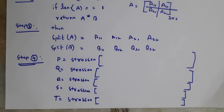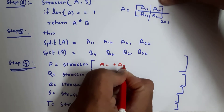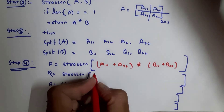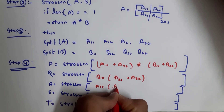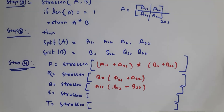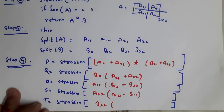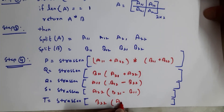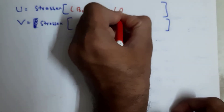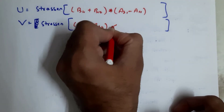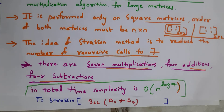Step 4: I use the variables P through V — that is P, Q, R, S, T, U, and V. Apply the formulas: P = (A11 + A22)(B11 + B22); Q = (A21 + A22) × B11; R = A11 × (B12 − B22); S = A22 × (B21 − B11); T = (A11 + A12) × B22; U = (B11 + B12) × (A21 − A11); V = (B21 + B22) × (A12 − A22). As already said, Strassen's matrix multiplication contains 7 multiplications, 4 additions, and 4 subtractions — if you count these you will get exactly that.